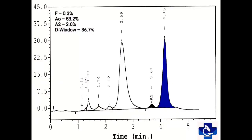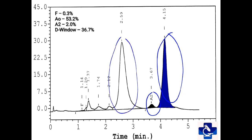In this graph, we can see that the D window has around 36.7% of hemoglobin fraction. A2 is normal at around 2.0% and A0 is around 53.2%, which is the predominant hemoglobin. Fetal hemoglobin is within normal limits. So this is the case of D Punjab or D Los Angeles heterozygous.